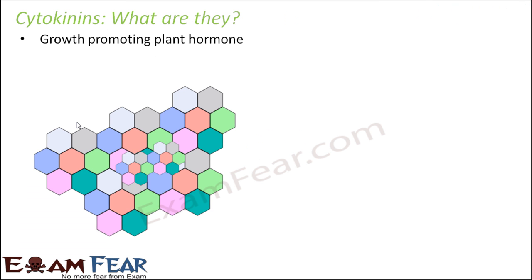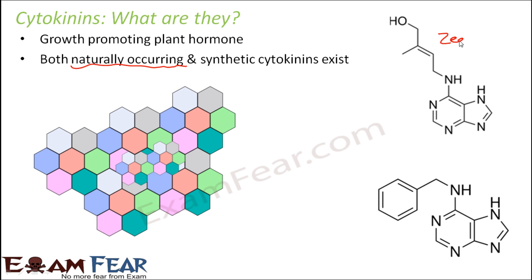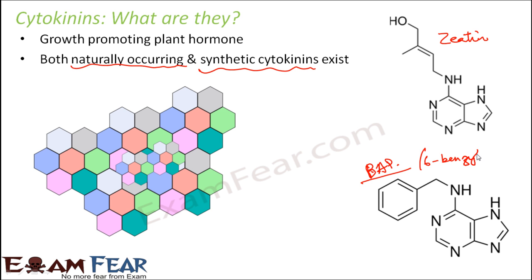So what are cytokinins? They are growth-promoting plant hormones. Both naturally occurring as well as synthetic cytokinins exist. An example of a naturally occurring cytokinin would be zeatin. If you talk about synthetic cytokinins, an example would be BAP — that is 6-benzyl-aminopurine. Whenever we say synthetic, that means it is artificially prepared.